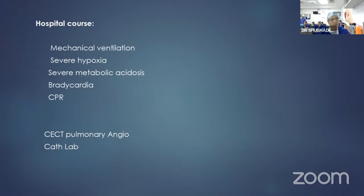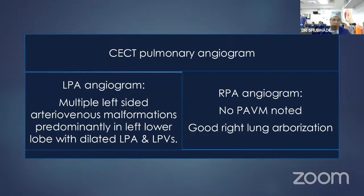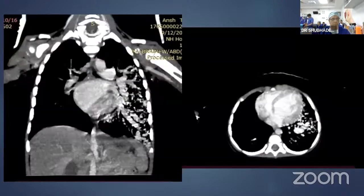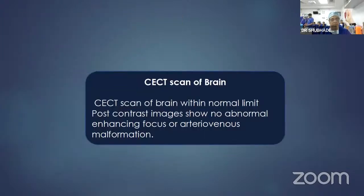In the CT pulmonary angiogram, there were multiple left-sided arteriovenous malformations between the left lower lobe with dilated left pulmonary artery and the left pulmonary veins. The right pulmonary angiogram was normal. The coronal and axial views show multiple left-sided arteriovenous malformations on the left lower lobe. CT scan of the brain was normal.